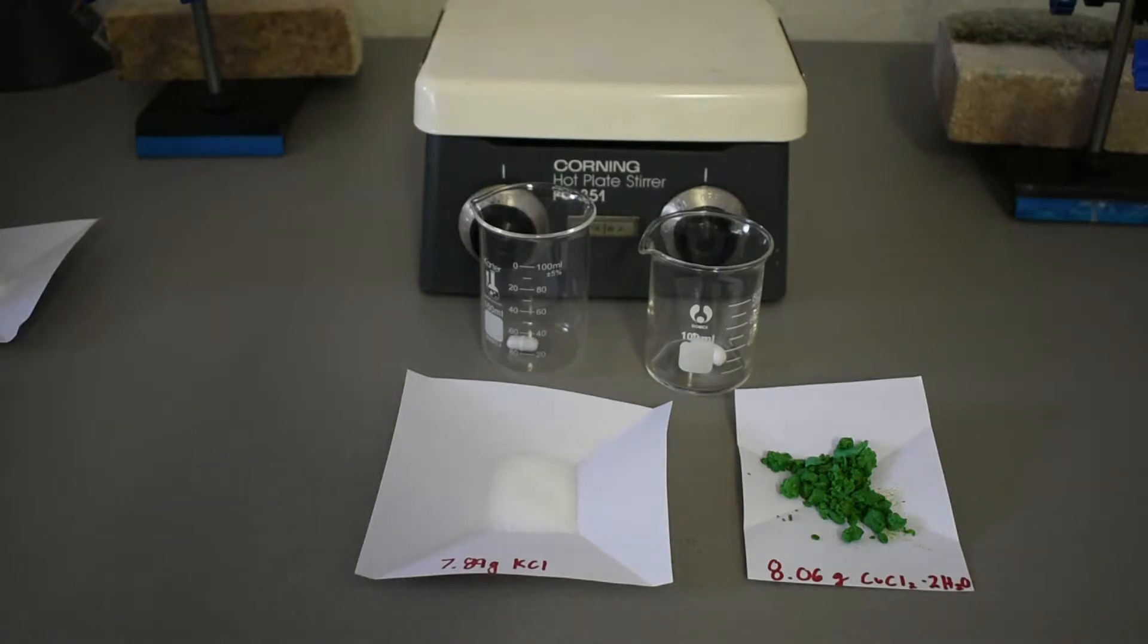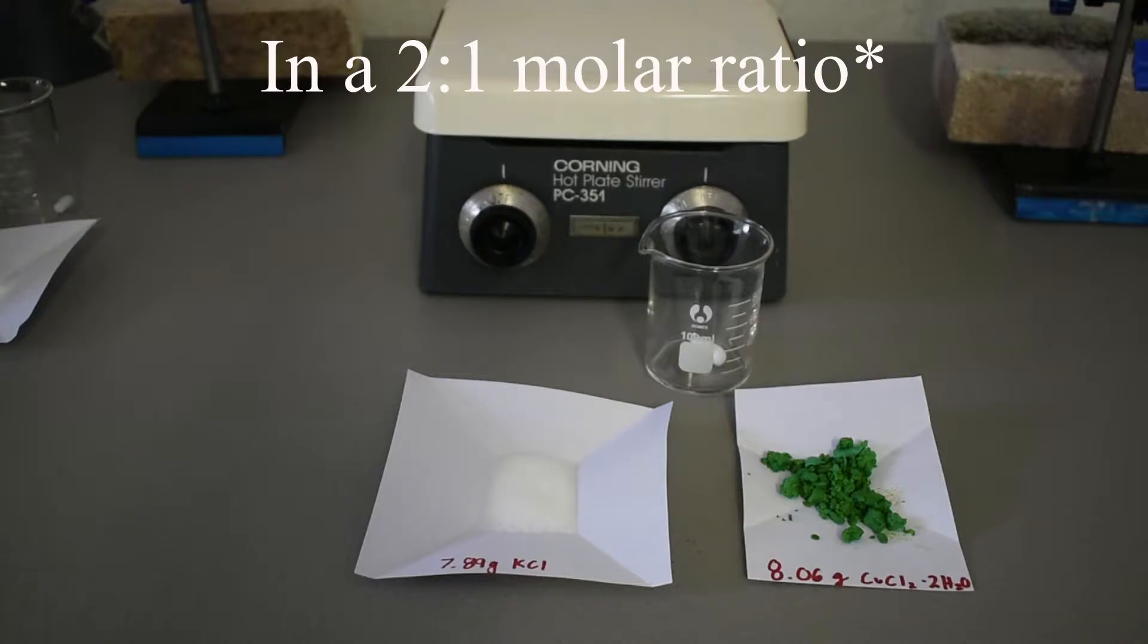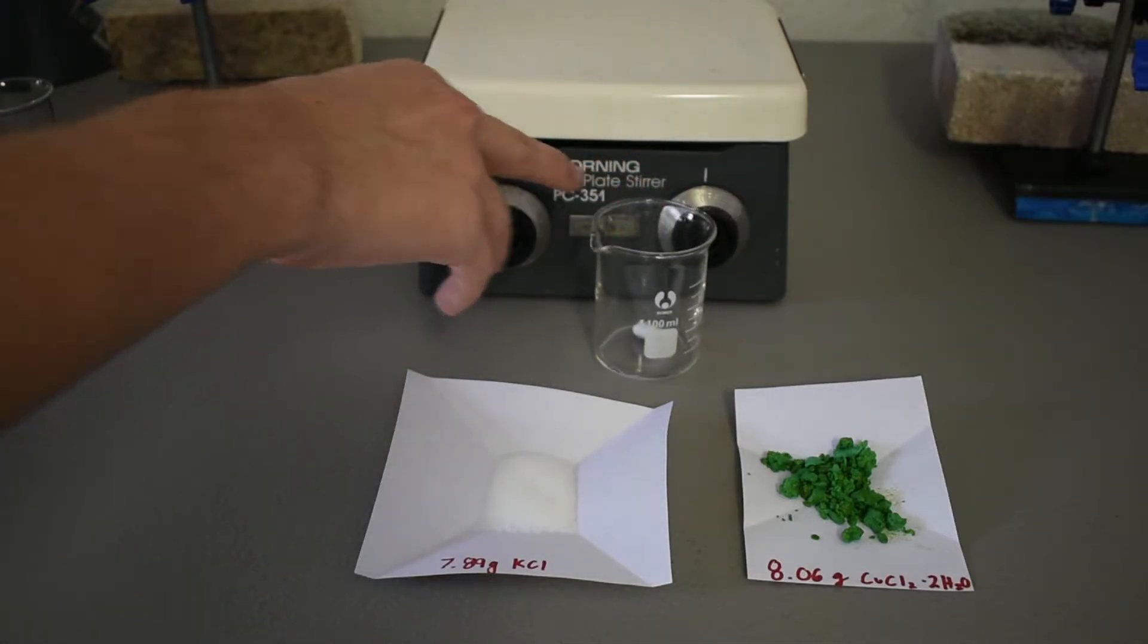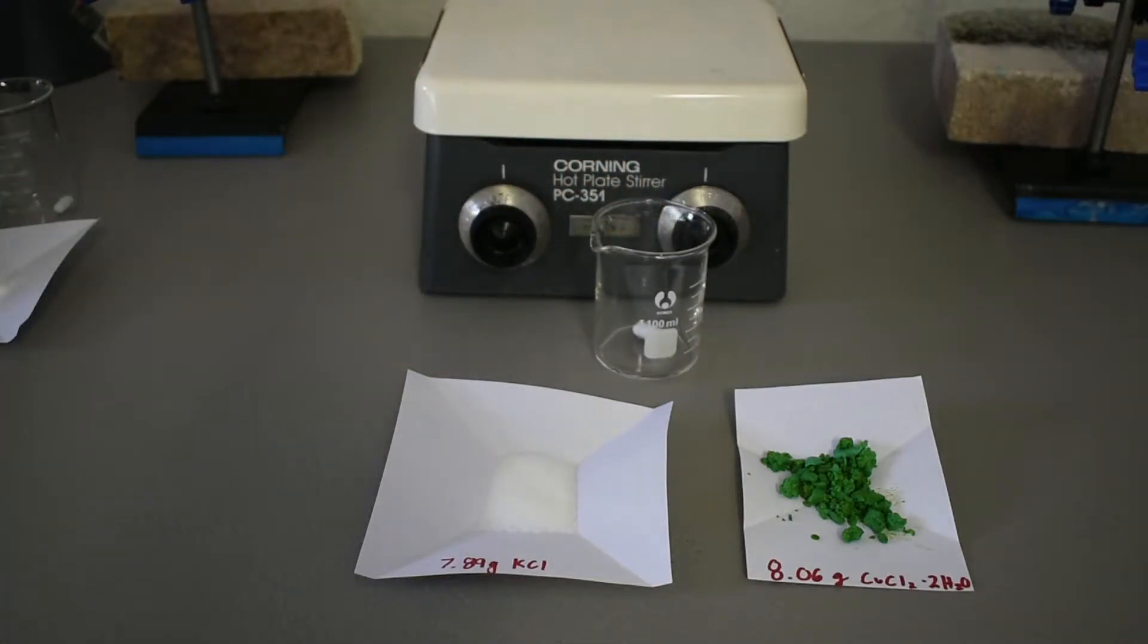I'm doing this on a scale where I should get about 15 grams of the potassium tetrachlorocuprate, so you're going to need 7.89 grams of potassium chloride and 8.06 grams of copper chloride dihydrate. And the preparation is actually very simple. All you have to do is combine these in aqueous solution, and then evaporate it slowly, and you'll get some nice crystals. Now the potassium salt is more of a light green, and the ammonium salt is more of a cyan bluey color.